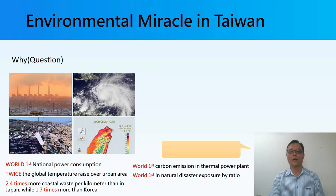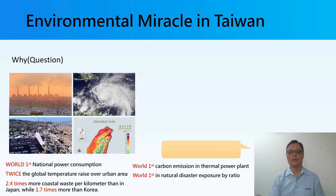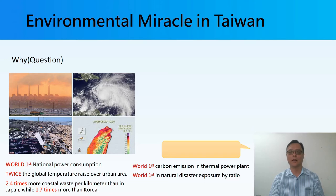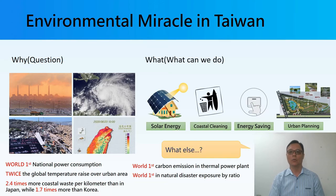Let's talk about why we need Smart Cities solutions. In Taiwan, we are facing many different kinds of environmental disasters. For example, Taiwan has a very high population density, the longest coastal line even compared with Korea and other countries, and very high energy consumption — especially from coal burning to create electricity supply for the entire nation.